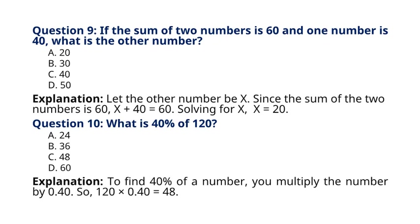Question 10. What is 40% of 120? A. 24, B. 36, C. 48, D. 60. Explanation: To find 40% of a number, you multiply the number by 0.40. So, 120 multiplied by 0.40 is equal to 48. So the correct answer to question 10 is option C. 48.